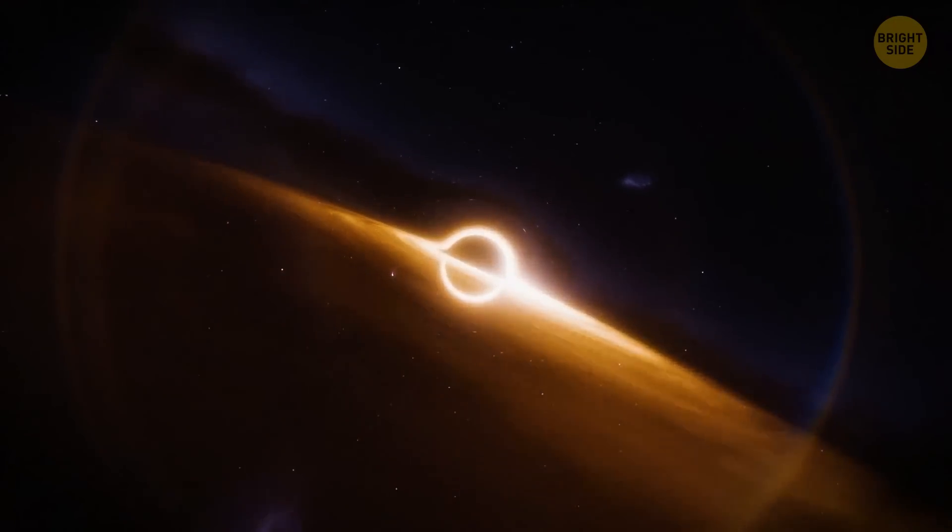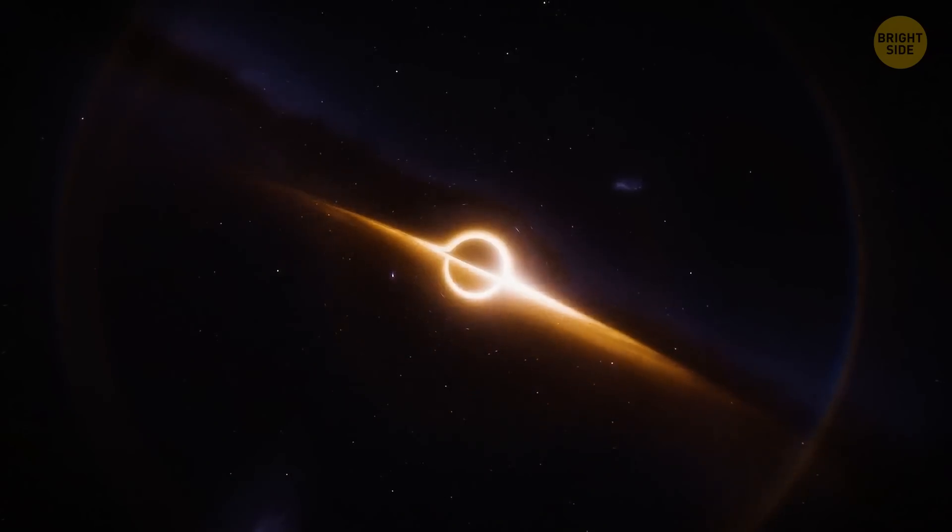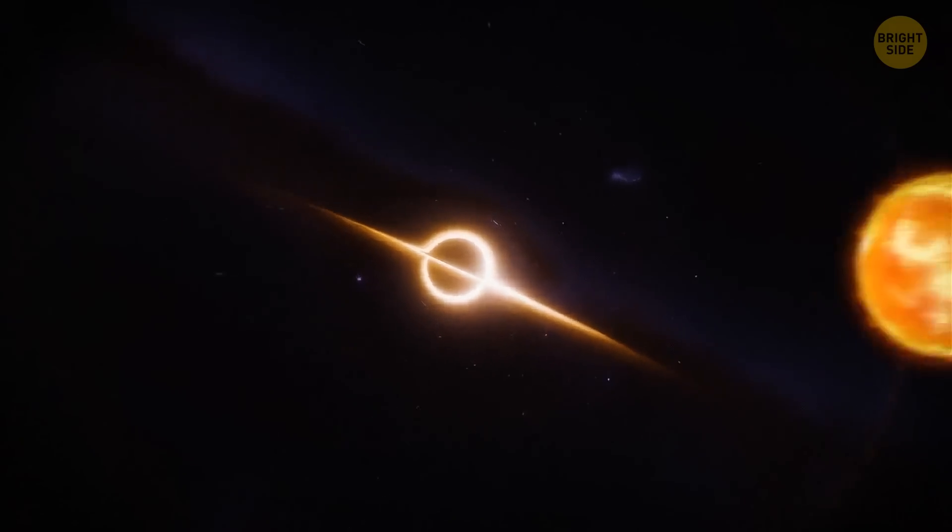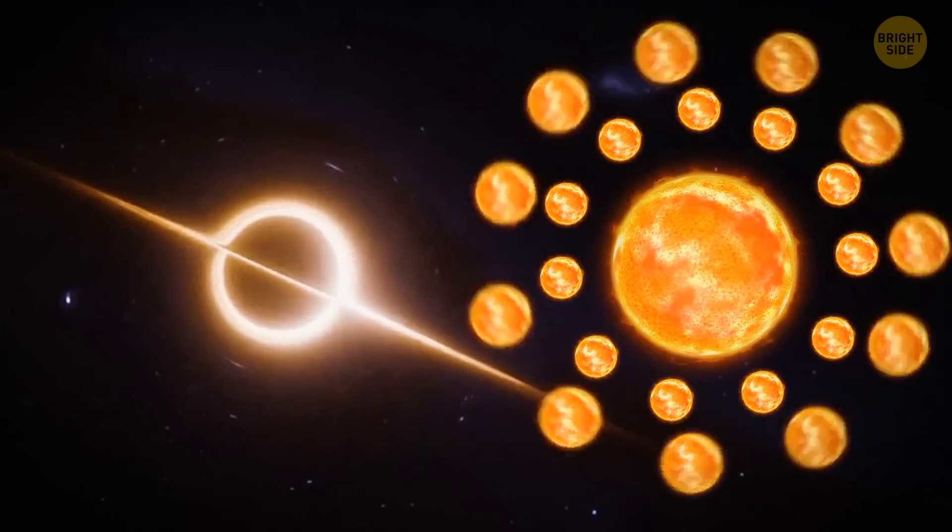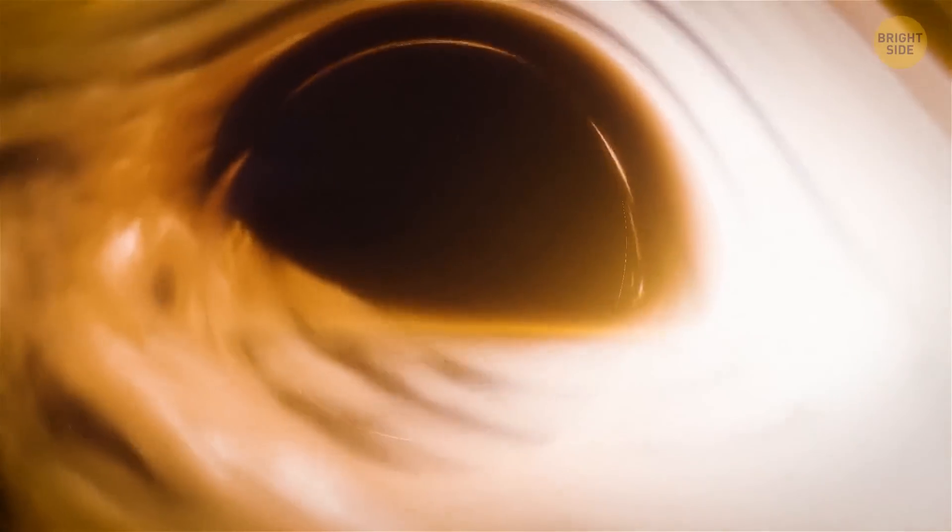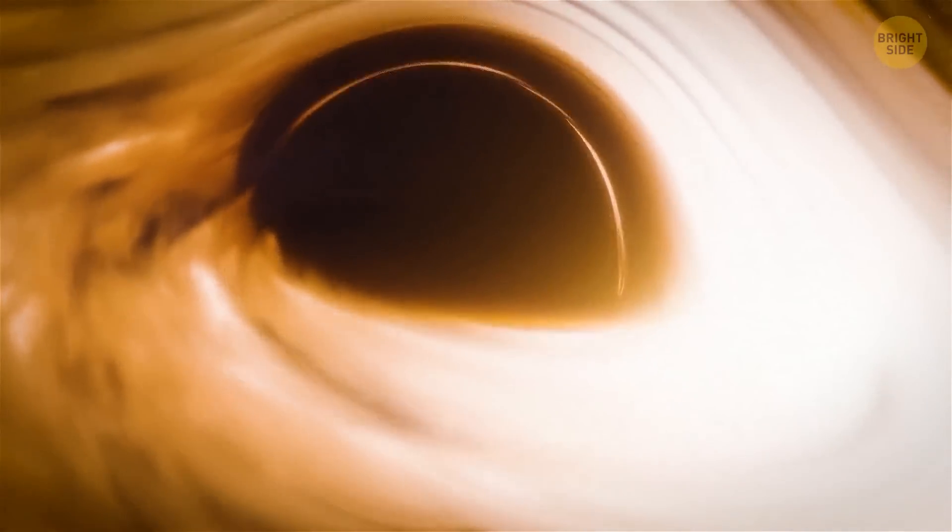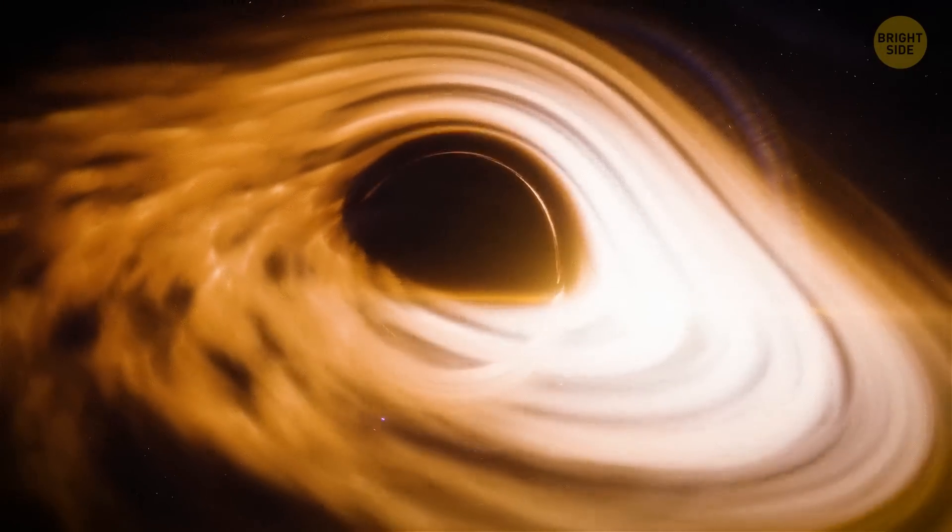The black hole is also one of the smallest and least massive ones found in the early universe. It's equal to approximately 9 million suns. It might seem like a lot, but in reality, supermassive black holes often grow to billions of times the mass of our star.